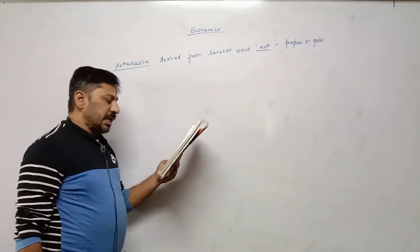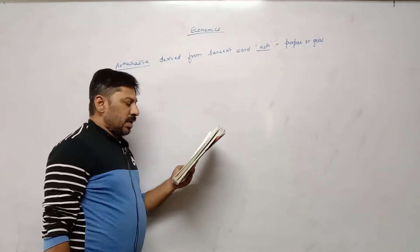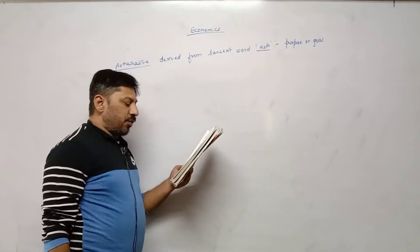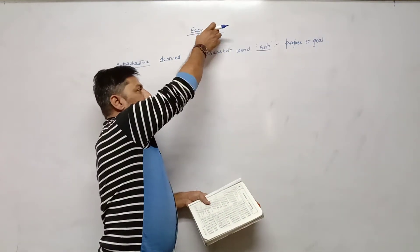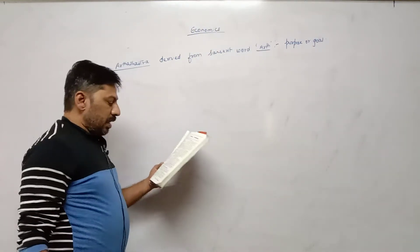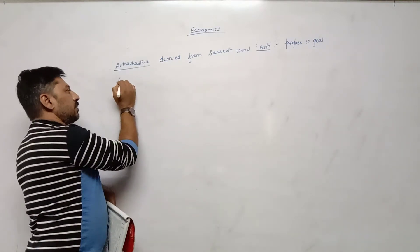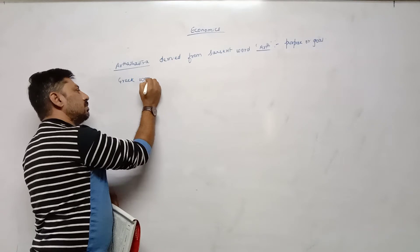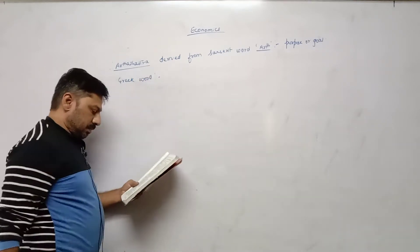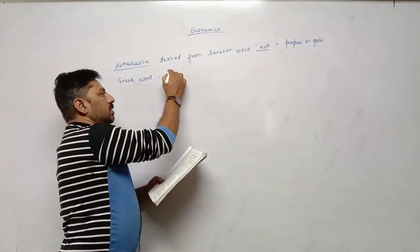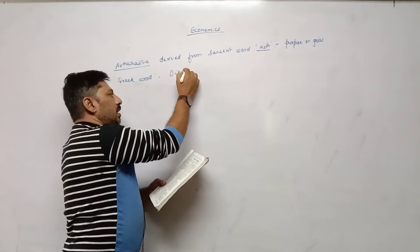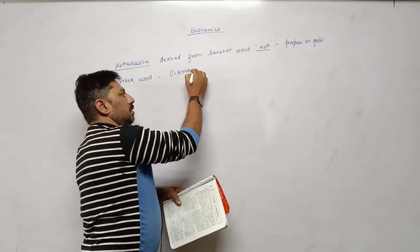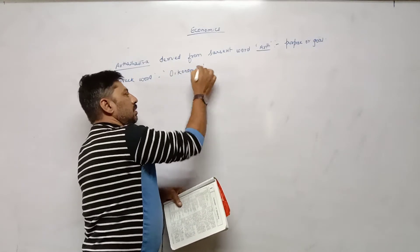The second important paragraph: the English word economics is derived from the Greek word Oikonomos — O-I-K-O-N-O-M-O-S. This is important for MCQ. The English word economics is derived from this Greek word.